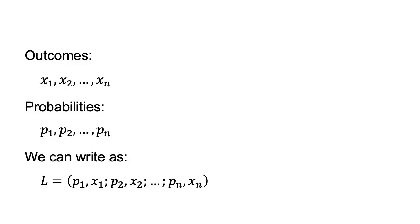A shorthand way to write this is L equals p1, x1; p2, x2; through to pn, xn.